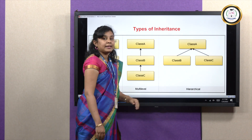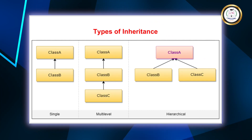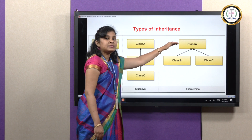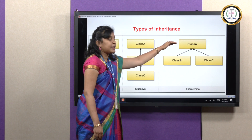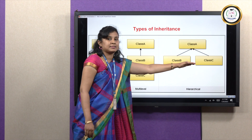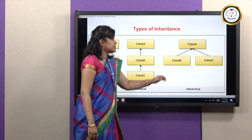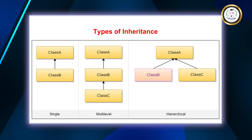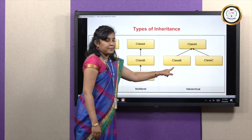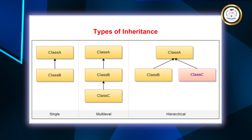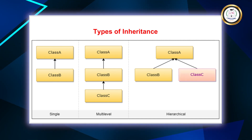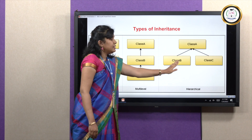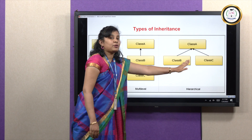In hierarchical inheritance, you have a single Superclass or Base Class. The property of this Base Class can be used by many other individual classes. Class B can use the property of Class A, and similarly Class C can use the property of Class A. Class B and Class C are not interconnected — they each have their own properties.